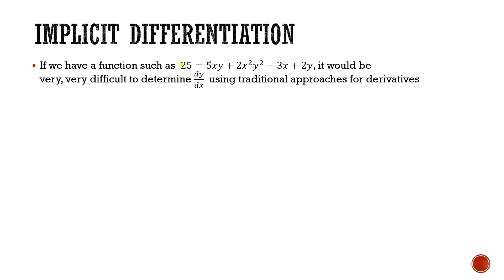If we have a function such as 25 is equal to 5xy plus 2x squared y squared minus 3x plus 2y, now there are only two variables here, y and x. So y would be a function of x or vice versa. Imagine if we wanted to find the derivative dy by dx.